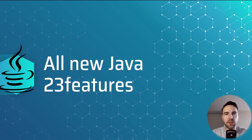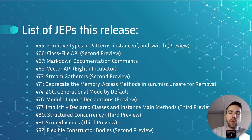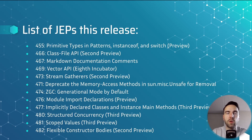Java 23 has been released on the 17th of September and in this video I'm going to summarize what all new features are in this release. There are 12 new JDK enhancement proposals and I want to divide them into two groups: the first being the new JEPs and the second being the returning JEPs which we have already seen and which are being previewed or incubated again.